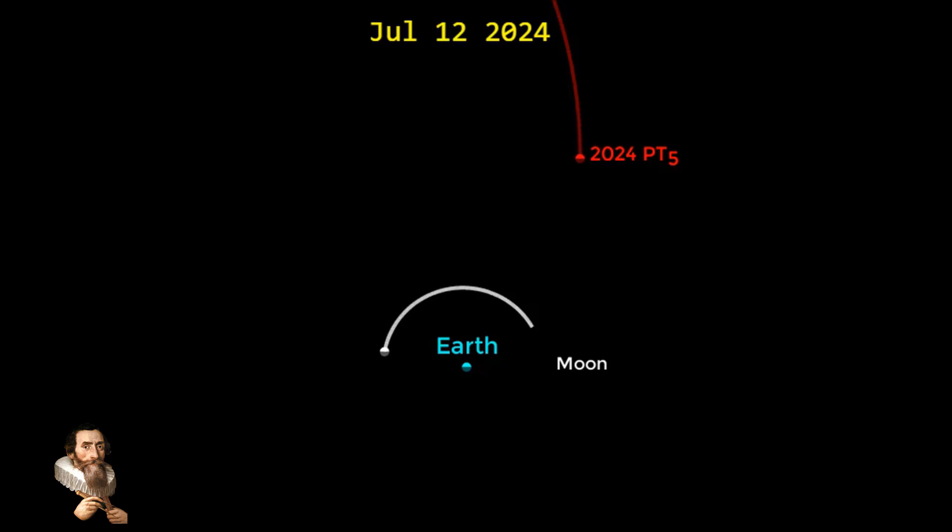This asteroid is relatively small, measuring only 33 feet in diameter. It belongs to a group of near-Earth objects known as Arjunas, which have orbits around the Sun that are similar to Earth's orbit.